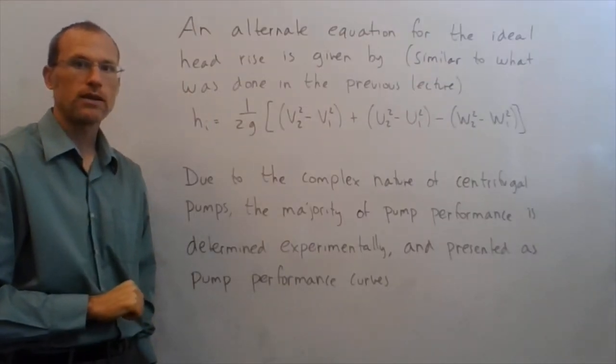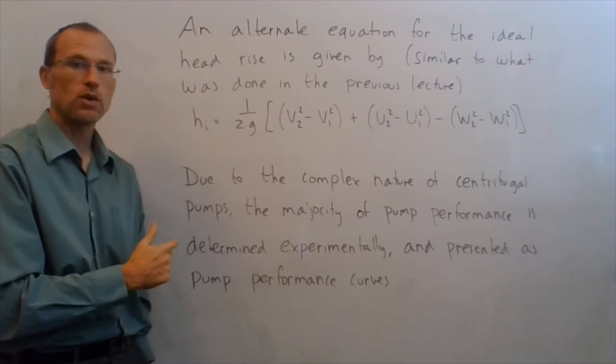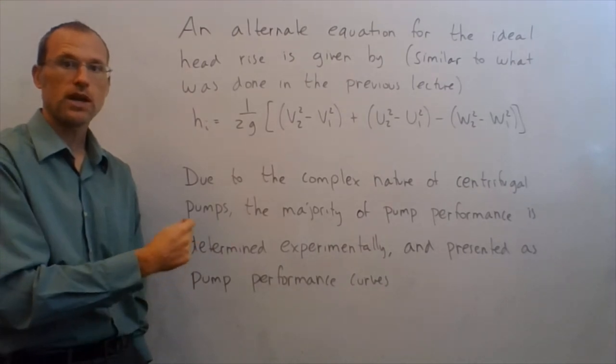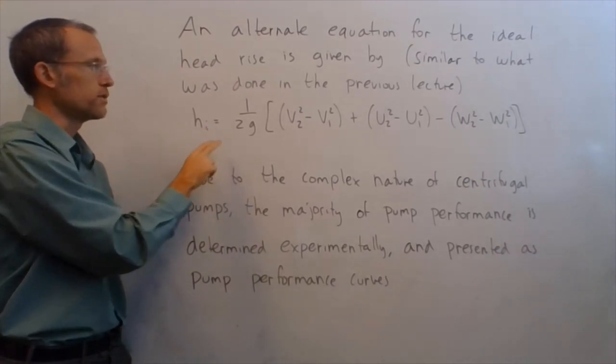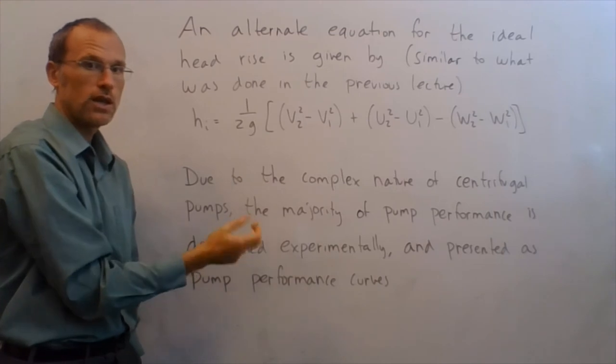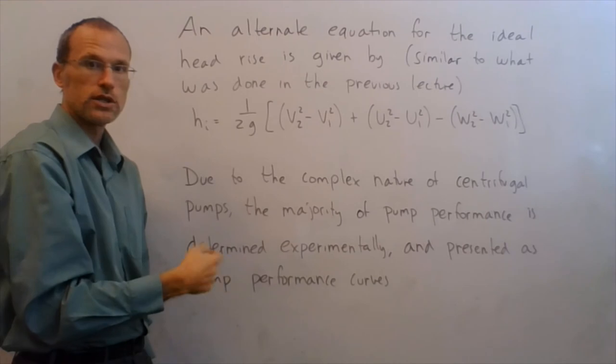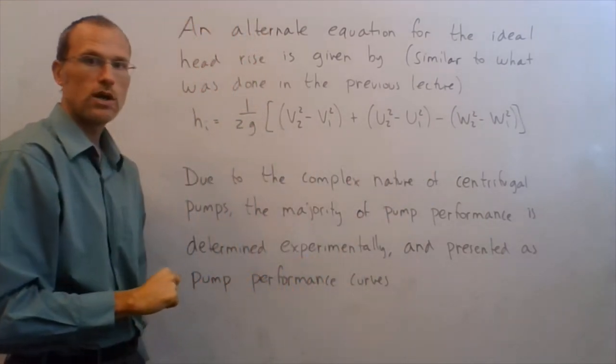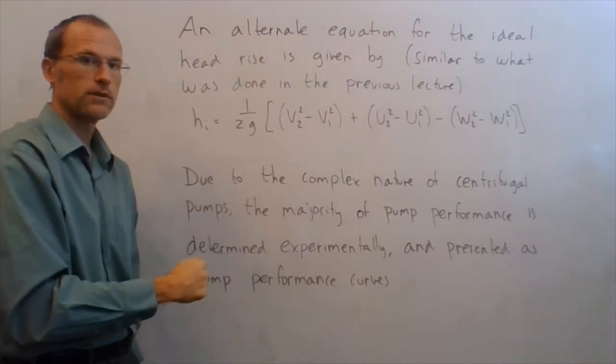So an alternative equation for the ideal head rise, we can find that by doing a similar thing to what we did last lecture, so converting these combinations of u times v into combinations that look like this, so my ideal head rise is 1 over 2g, v2 squared minus v1 squared, so essentially kinetic energy gained by the fluid, plus u2 squared minus u1 squared, kinetic energy gained by the fan blades, then minus w2 squared minus w1 squared, so that's again stuff that's going on inside the pump itself, in terms of the relative fluid motion.